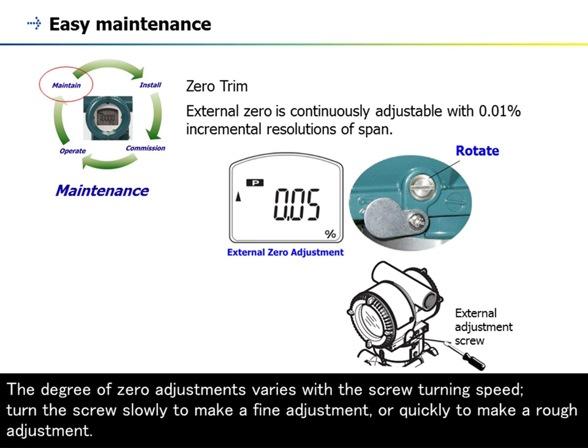The degree of zero adjustment varies with the screw turning speed. Turn the screw slowly to make a fine adjustment, or quickly to make a rough adjustment.